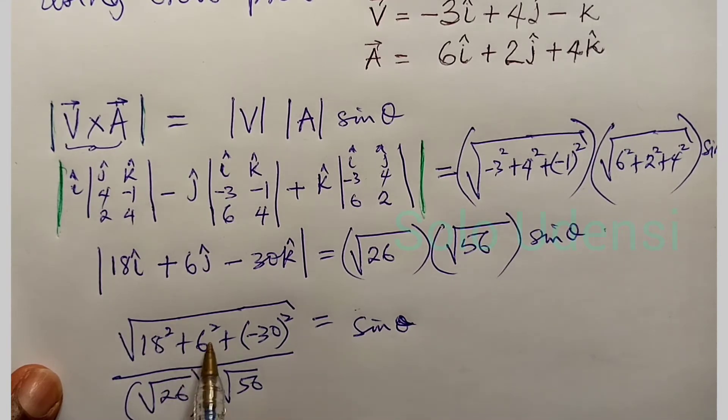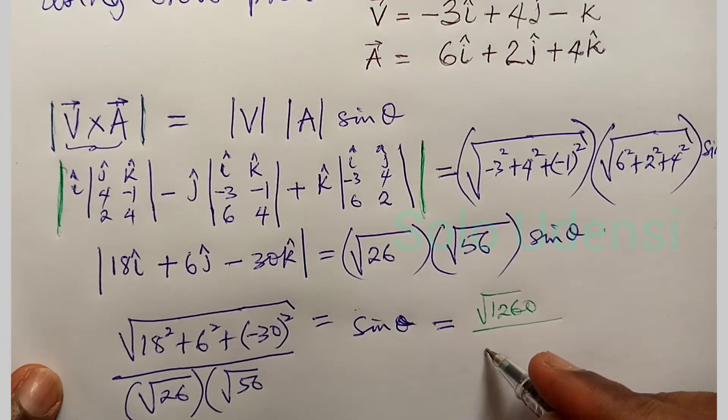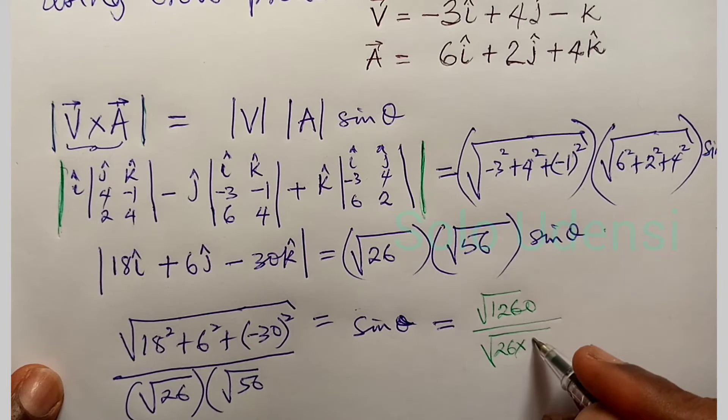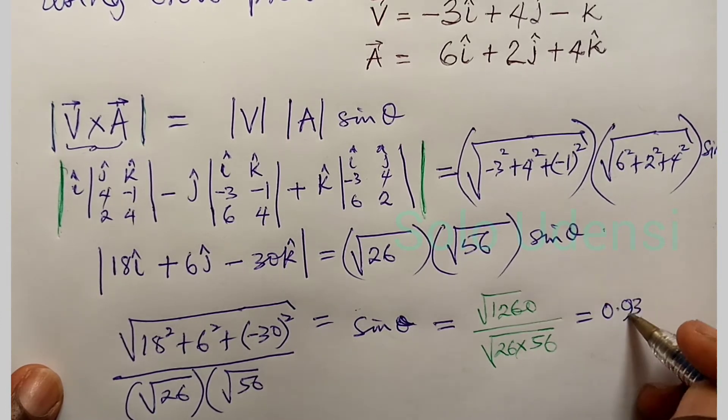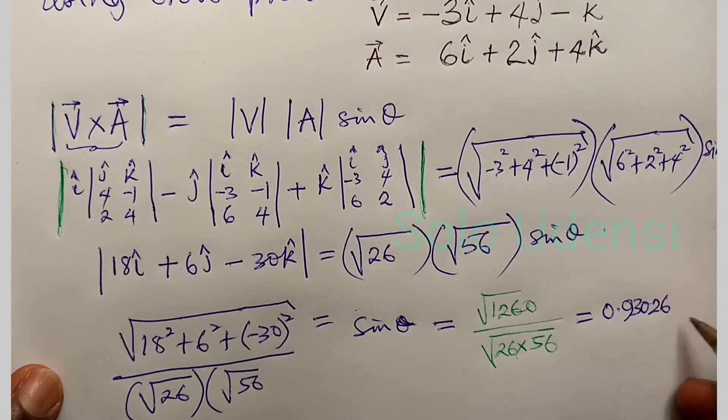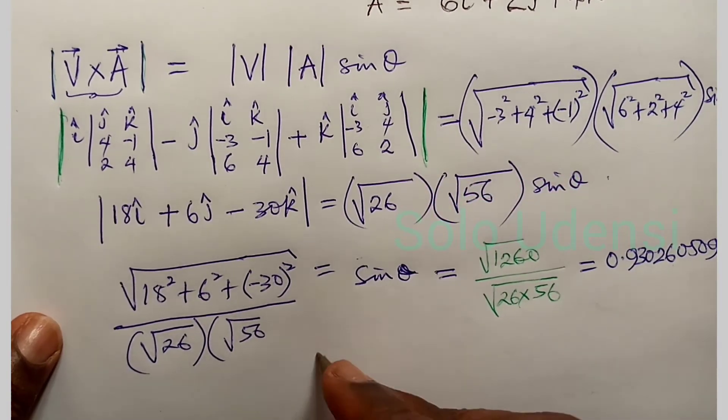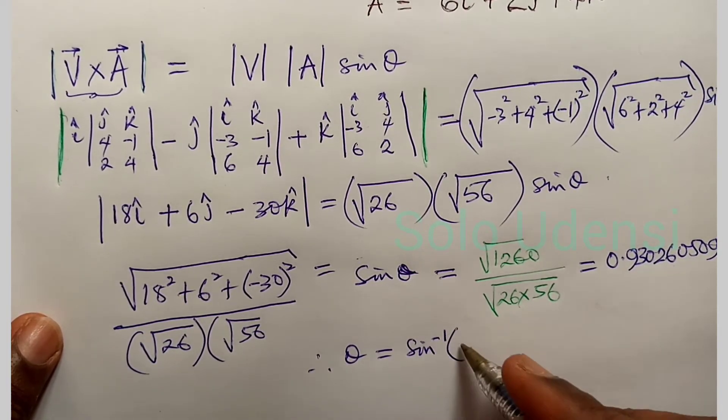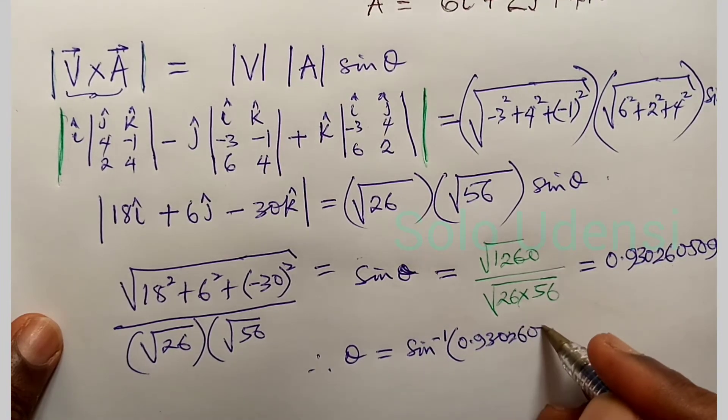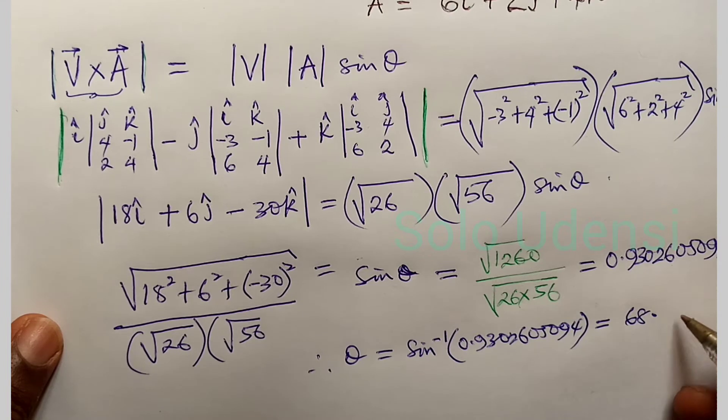So that this one will give us is equal to square root of 1260 all over square root of 26 times 56. And this will be equal to 0.93026, 0.93094 approximately. Therefore theta is equal to sine inverse of 0.93094, and this is equal to 68.475, approximately 68.5 degrees. But,